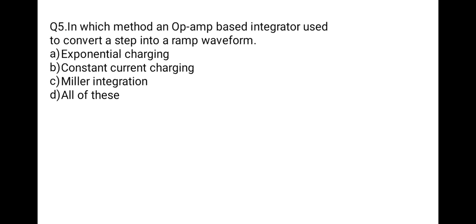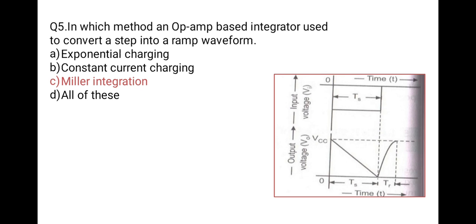The next question: in which method is an op-amp based integrator used to convert a step input into a ramp waveform? Options: exponentially charging, constant current charging, Miller integration, or all of these. Looking at the graph, the input is a step and the output is a ramp waveform — this is the output of Miller integration. So the correct option is C: Miller integration.